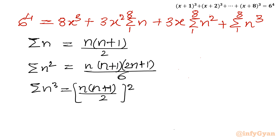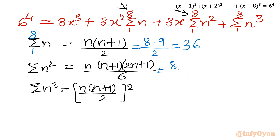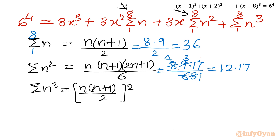Putting n=8: sigma n from 1 to 8 = 8×9/2 = 36. Sigma n² from 1 to 8 = 8×9×17/6 = 12×17 = 204. And sigma n³ from 1 to 8 = 36² = 1296.